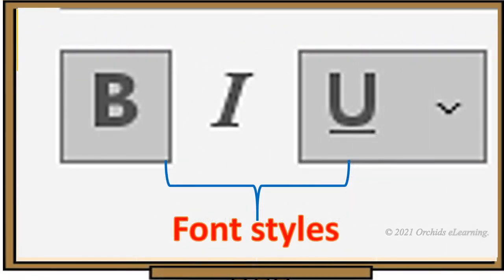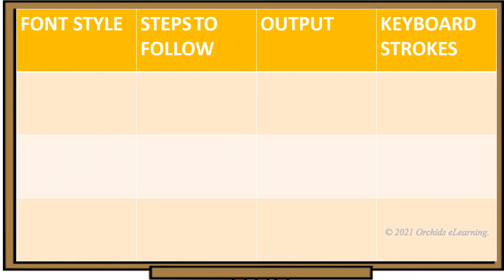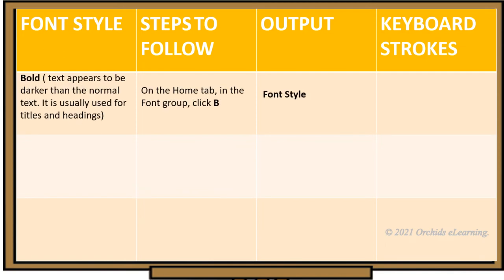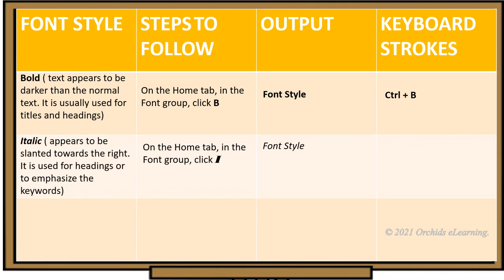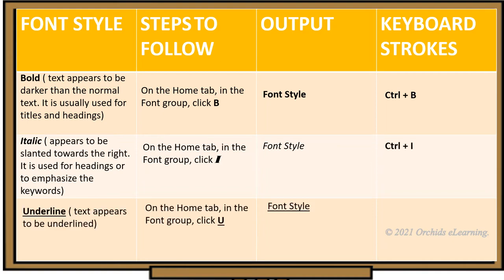Font styles are predefined formatting options that are used to emphasize the text. Let us see the various font styles and their functions. Bold: text appears darker than the normal text; it is usually used for titles and headings. Shortcut key is Ctrl+B. Italic: appears slanted towards the right; it is used for headings or to emphasize keywords. Keyboard shortcut is Ctrl+I. Underline: text appears underlined. Shortcut key is Ctrl+U.